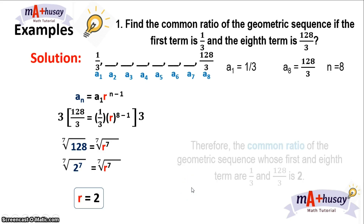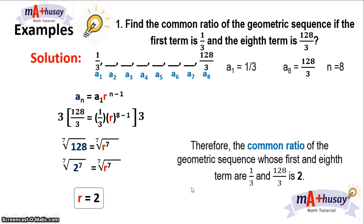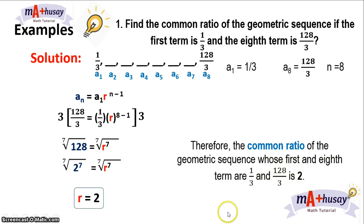In this example, the common ratio of the geometric sequence whose first and eighth terms are one-third and 128 over 3 is 2.